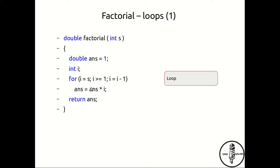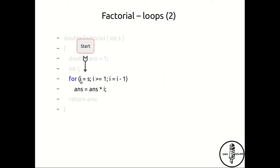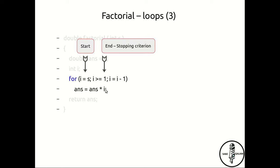There are three important things to recognize here. The first is the start: double answer has been assigned 1 and i has been assigned s. The second is the end, otherwise referred to as the stopping criteria in recursive functions — the loop ends when i reaches 1, so the last operation is answer assigned as answer times 1. The third is the update: answer stores the running product, and i is decremented every step — s, then s minus 1, then s minus 2.